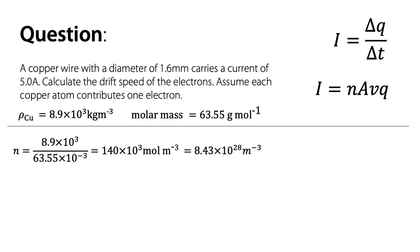So 8.9 × 10³ divided by 63.55 × 10⁻³, which is the number of kilograms that each mole takes up, will give us the number of moles in one meter cube of copper: 140 × 10³ moles in one meter cubed.